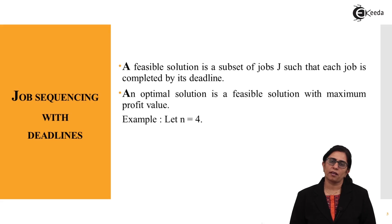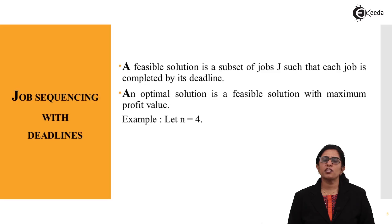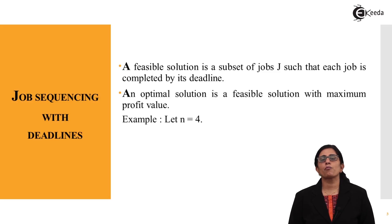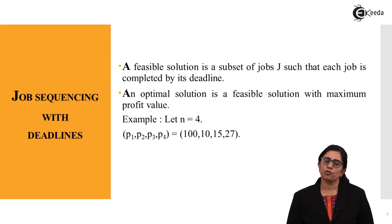A feasible solution is a subset of jobs J such that each job is completed by its deadline. An optimal solution is a feasible solution with the maximum profit value — the one which gives the maximum profit is the most feasible solution.